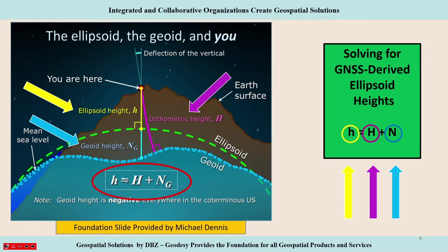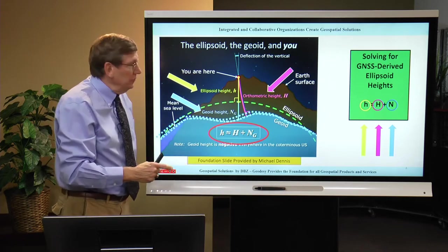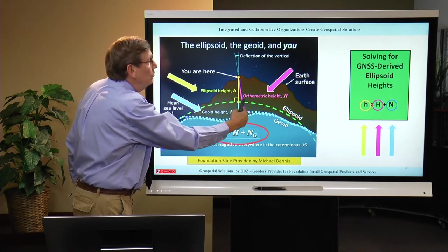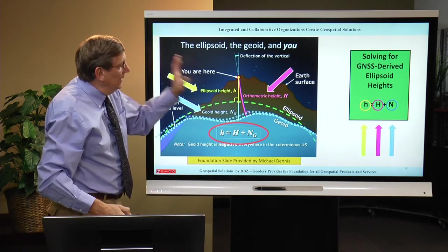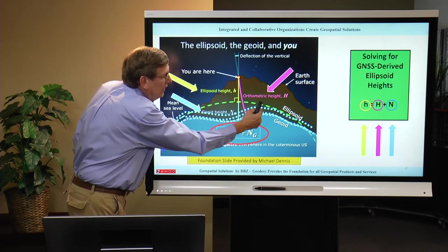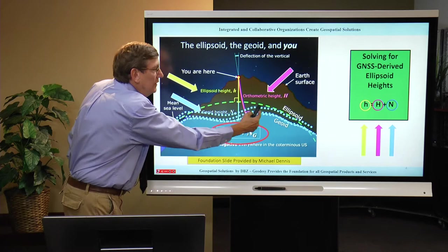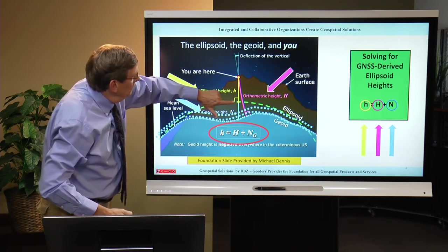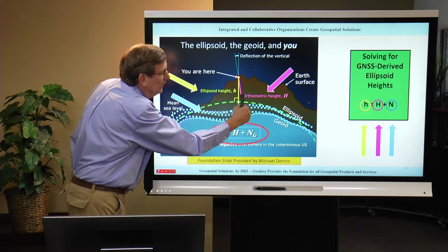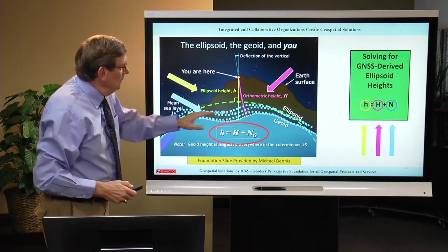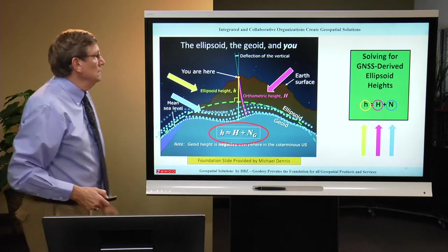I'd like to show why the orthometric height line is curved. The geoid is an equipotential surface, but there are an infinite number of equipotential surfaces from the geoid up to the surface point. The orthometric height line must be perpendicular to each of those surfaces, and since these surfaces are not parallel to each other, the line curves. I've exaggerated it here to illustrate the concept. For all practical purposes, the approximation H ≈ h − N still holds.